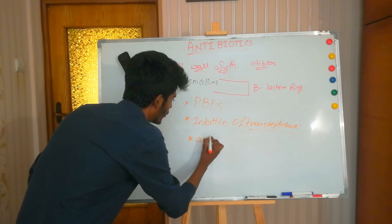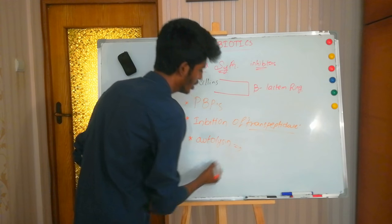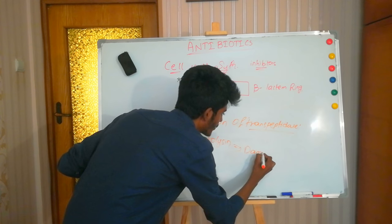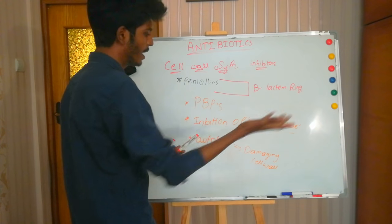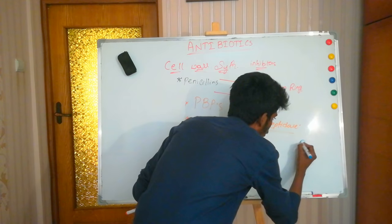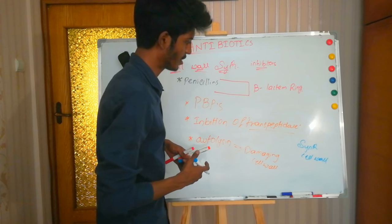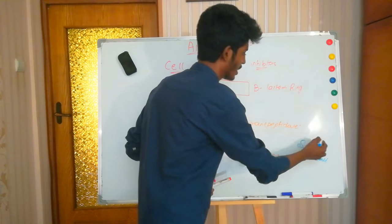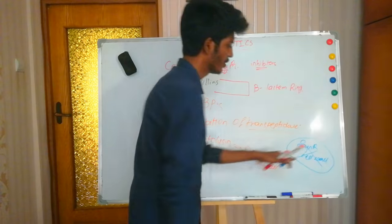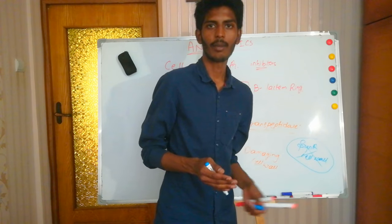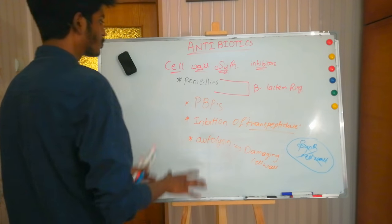The third factor involves autolysins. Bacteria continuously produce autolysins, which damage the existing cell wall, while simultaneously synthesizing new cell wall. When penicillin inhibits cell wall synthesis, the autolysins keep damaging the cell wall with no new wall being formed, and the bacteria are killed. Because bacteria are killed, penicillins belong to the group of bactericidal antibiotics.